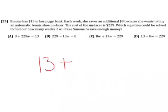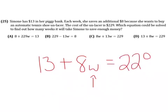So, she starts off with $13, we take the number of weeks, W times 8, and she wants to have $229. So, if we were to solve this equation, it would give us how many weeks, W, it would take to get up to $229. So, she can buy that automatic tennis shoe unlacer.